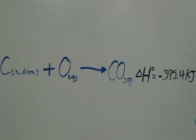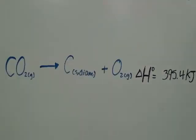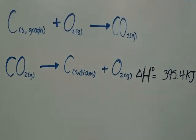See for equation 2, the diamond is on the wrong side. Using Hess's law, when you reverse reactions, you also reverse the sign. That makes the delta H value a positive 395.4 kilojoules. Now you can add them together.